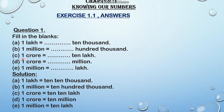Now the next part: 1 crore is equal to dash 10 lakh. 1 crore is equal to 10,000,000. So 1 crore is equal to 10 × 1,000,000. Got it children?